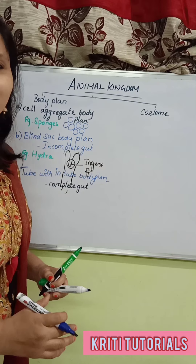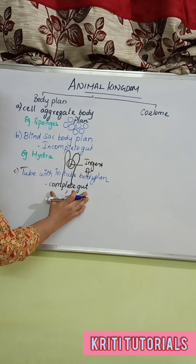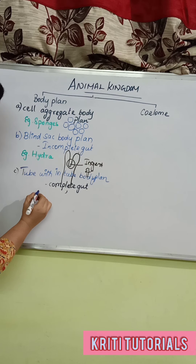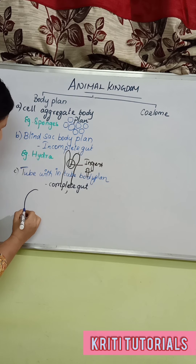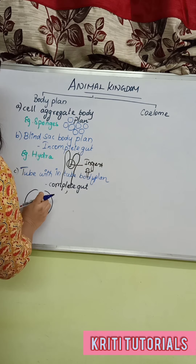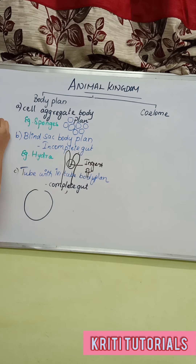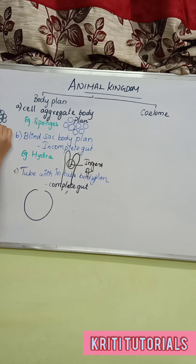You have to be clear with the term: during the formation of the alimentary canal, initially the zygote develops to form an embryo. Later, the embryo develops into a stage called morula.